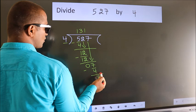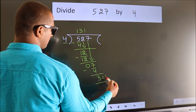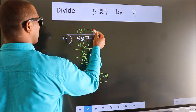No more numbers to bring it down. So, we stop here. This is our remainder. This is our quotient.